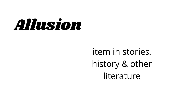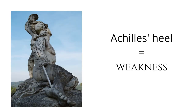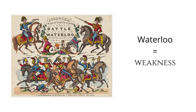An allusion is a metaphor found in stories, history, or other literature. A reader or listener cannot understand an allusion unless that person is familiar with what the allusion refers to. Thus, unless a reader is familiar with the Greek mythology hero Achilles, he will not understand the term Achilles' heel. Similarly, when a listener hears someone say 'Math is my Waterloo,' the listener will not understand that the speaker considers math as the speaker's weakness unless the listener knows that Waterloo is the place where the great conqueror Napoleon Bonaparte was defeated.